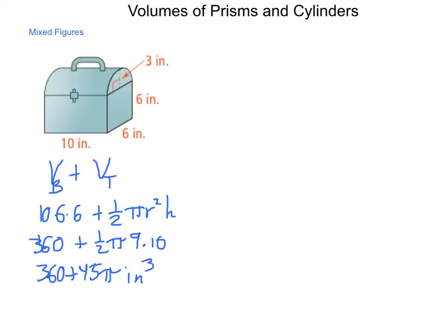Now, this one, since we're looking at a practical application, we do want a little bit more specific of a number. If I were to multiply forty-five times three and fourteen hundredths for pi, I would get three hundred and sixty plus one hundred and forty-one and three tenths cubic inches.